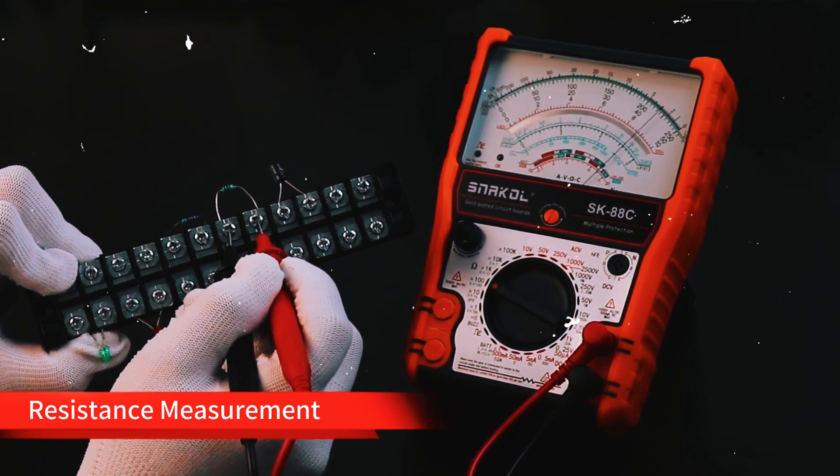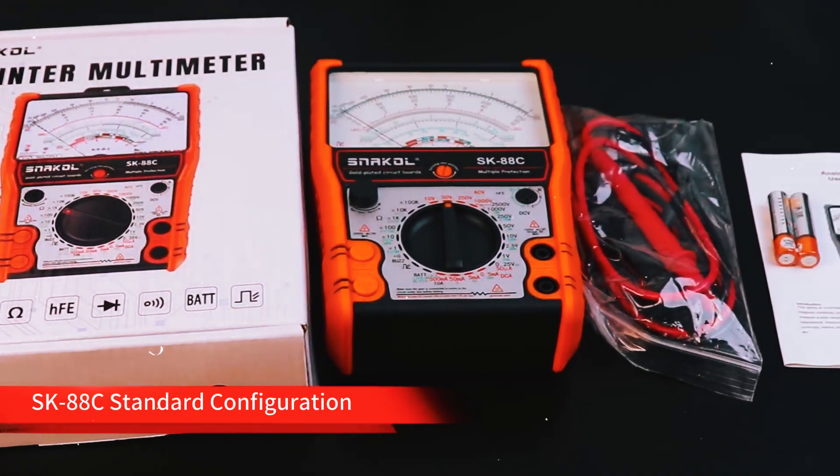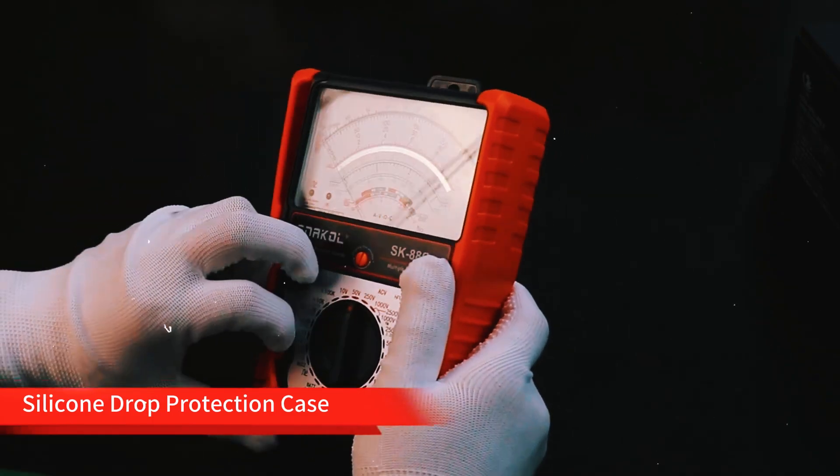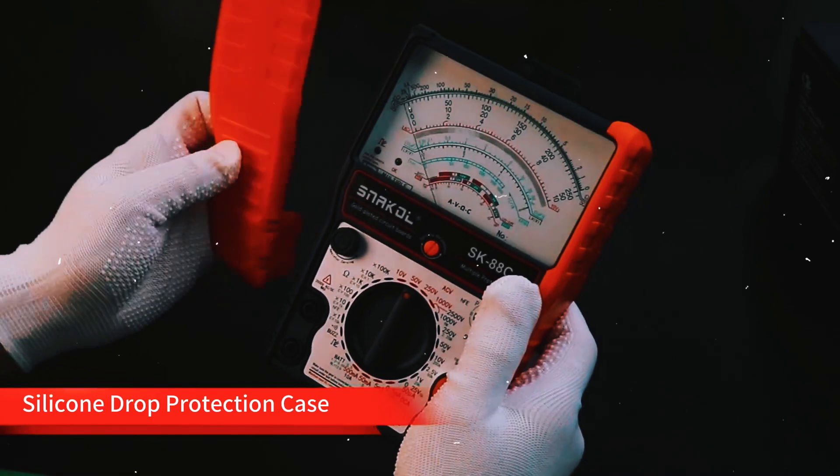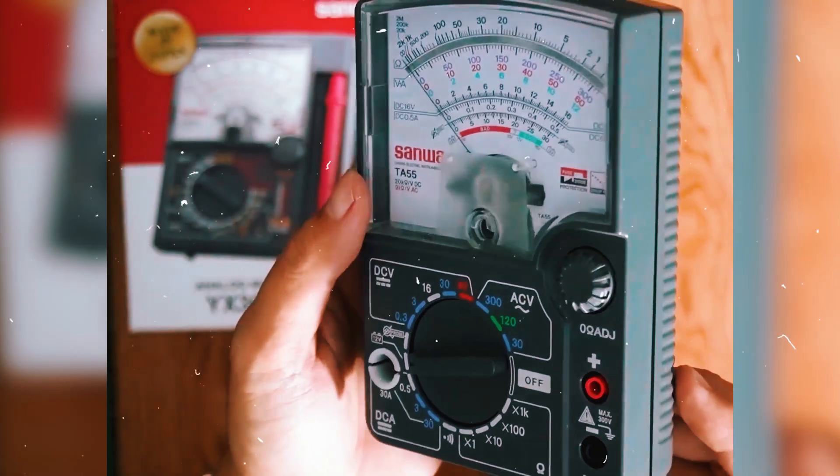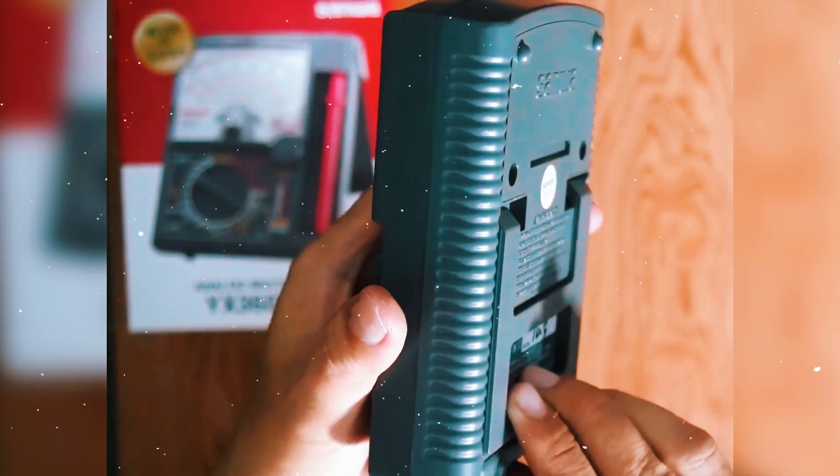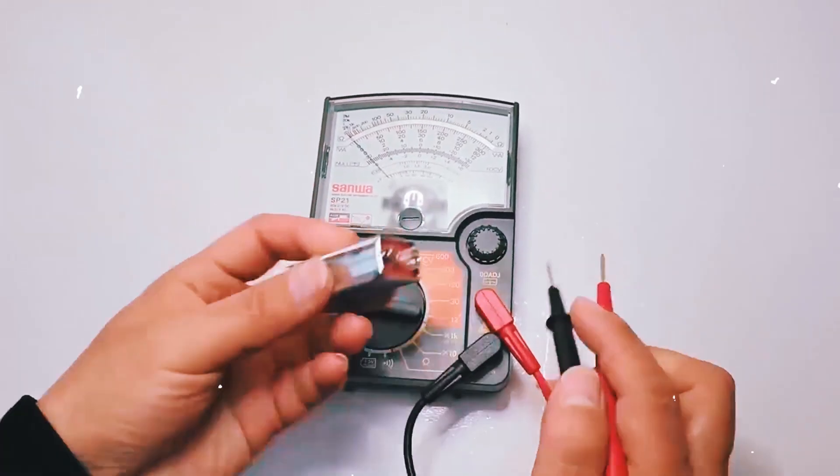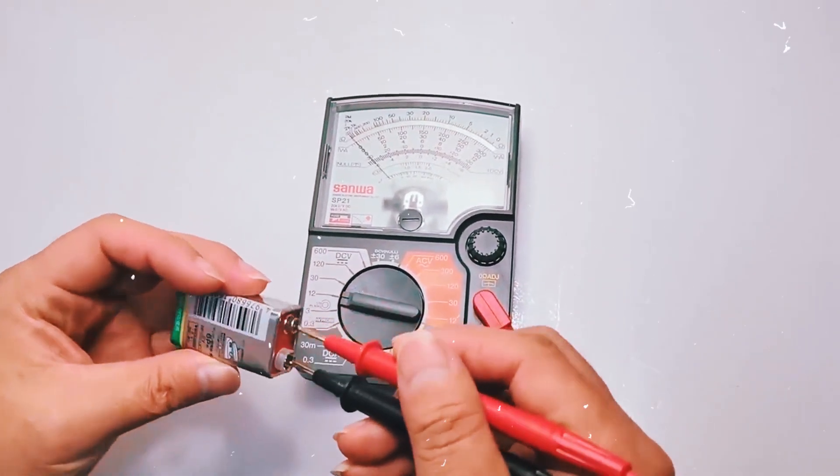Now, let's talk about durability. If you need something that can take a beating, analog multimeters are the way to go. They're a lot more rugged because they don't rely on delicate electronic parts. You can drop them or bump them around, and they'll keep working.